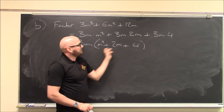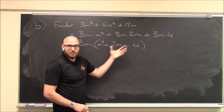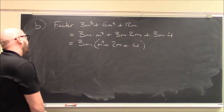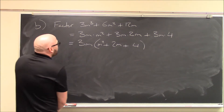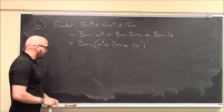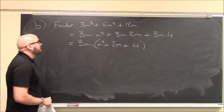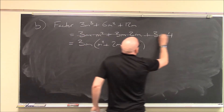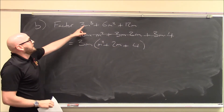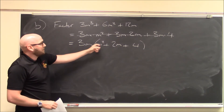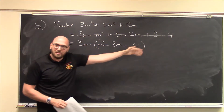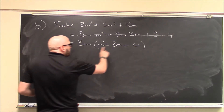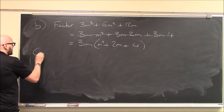Sometimes you'll still have stuff left inside that you can factor further. In this case it doesn't look like we can, but we'll get to that. One more thing: in the future I won't usually write that intermediate step — we'll just observe immediately that we can pull 3m out and do the rest of the work in our head. Before we factor trinomials, let me point out a really common factorization worth remembering.